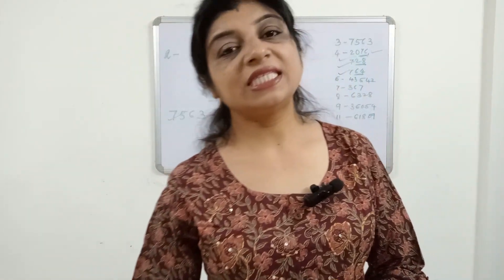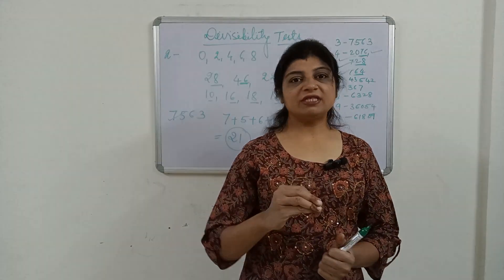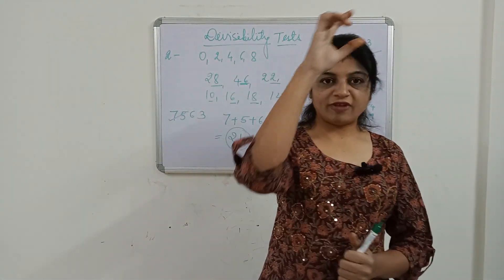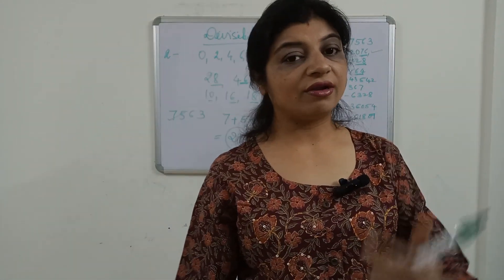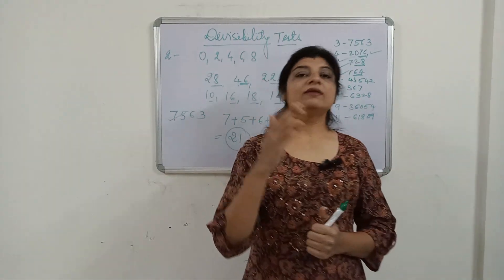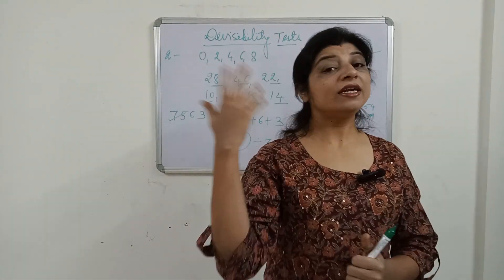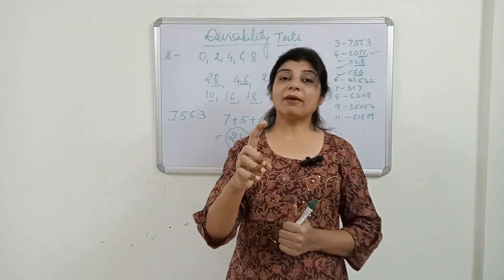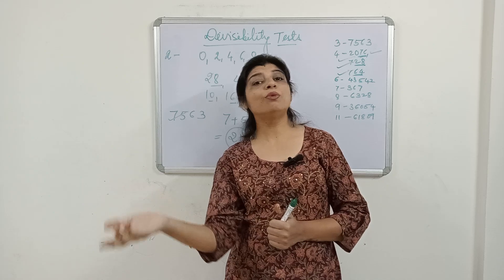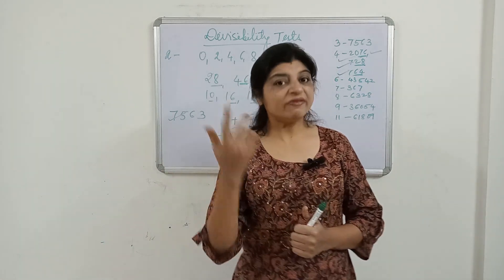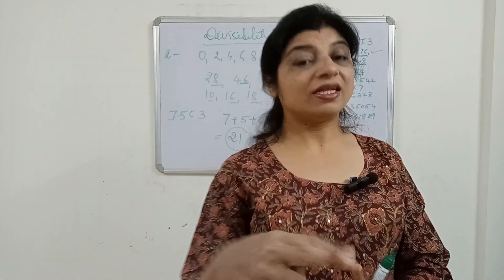Divisibility of 6: a number is divisible by 6 then and then only when it is divisible by both 2 and 3. That is, the number should satisfy the divisibility test of 2 — meaning its ones place must have 0, 2, 4, 6, or 8 — and it must also satisfy the divisibility test of 3, meaning the sum of its digits must be divisible by 3. A number divisible by both 2 and 3 is divisible by 6.